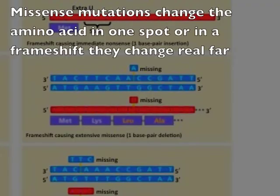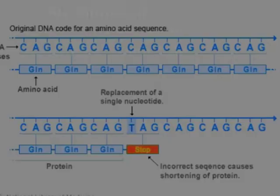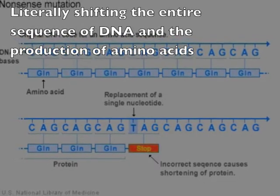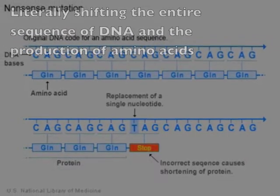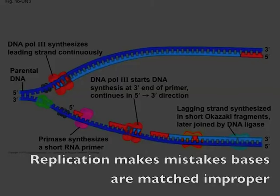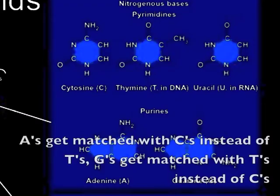Missense mutations can change the amino acid in one spot, or change it far. DNA copying errors can cause genes to mutate. Replication makes mistakes — bases get matched improperly: A's get matched with C's instead of T's, G's get matched with T's instead of C's.